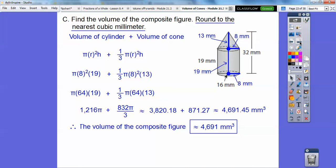So round to the nearest cubic millimeter, that's what the direction said, so I rounded that to 4,691 millimeters cubed.